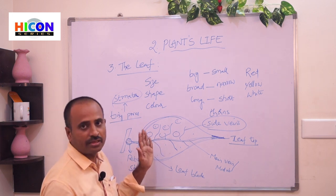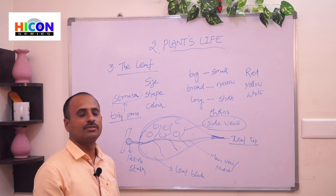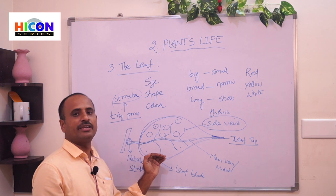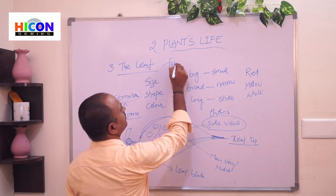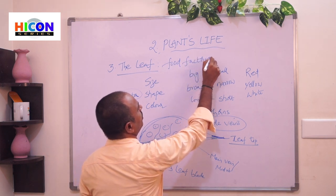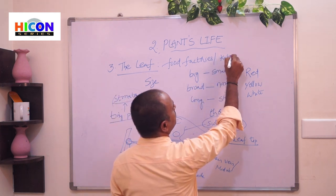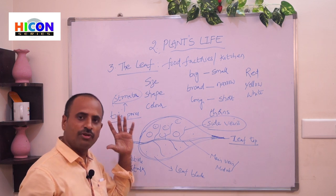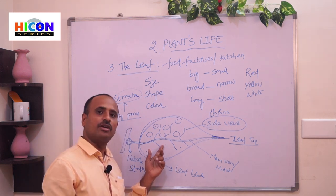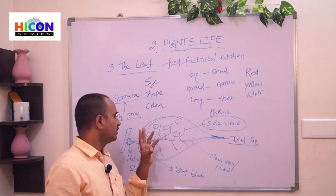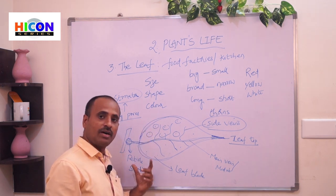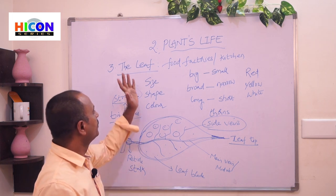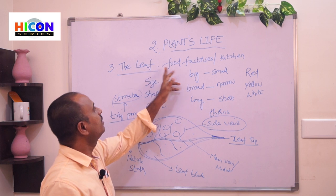Leaves are very important because they are the food makers of the plant. That is why leaves are called the kitchen or food factory of the plant. Leaves prepare the food required for the plant using the process called photosynthesis. The green pigment present in the leaves is called chlorophyll, and using chlorophyll in the presence of sunlight, they mix water and carbon dioxide to prepare food.